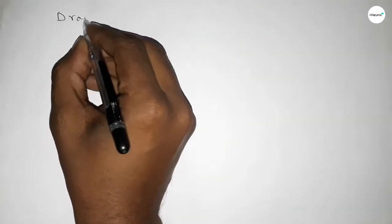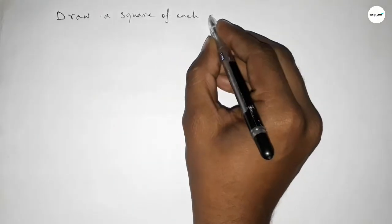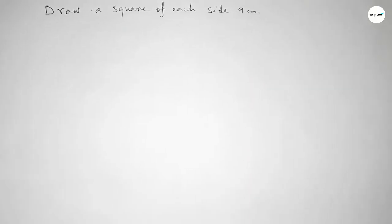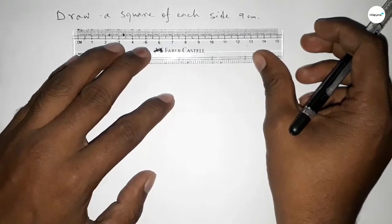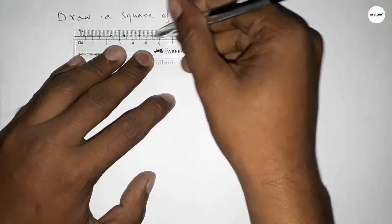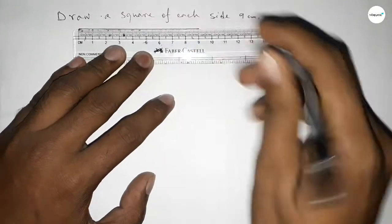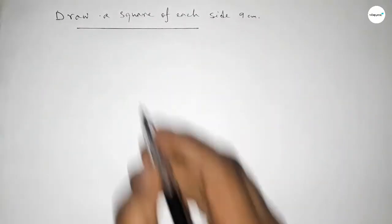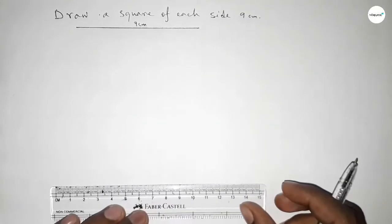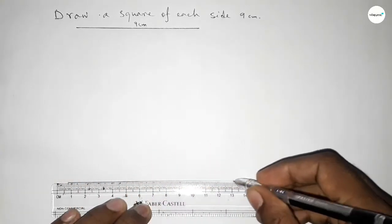Hi everyone, welcome to SSR Classes. Today in this video we have to draw a square of each side 9 centimeters. First, drawing the given length 9 centimeters — counting 0, 1, 2, 3, 4, 5, 6, 7, 8, 9. Now we have to draw a straight line of any length.